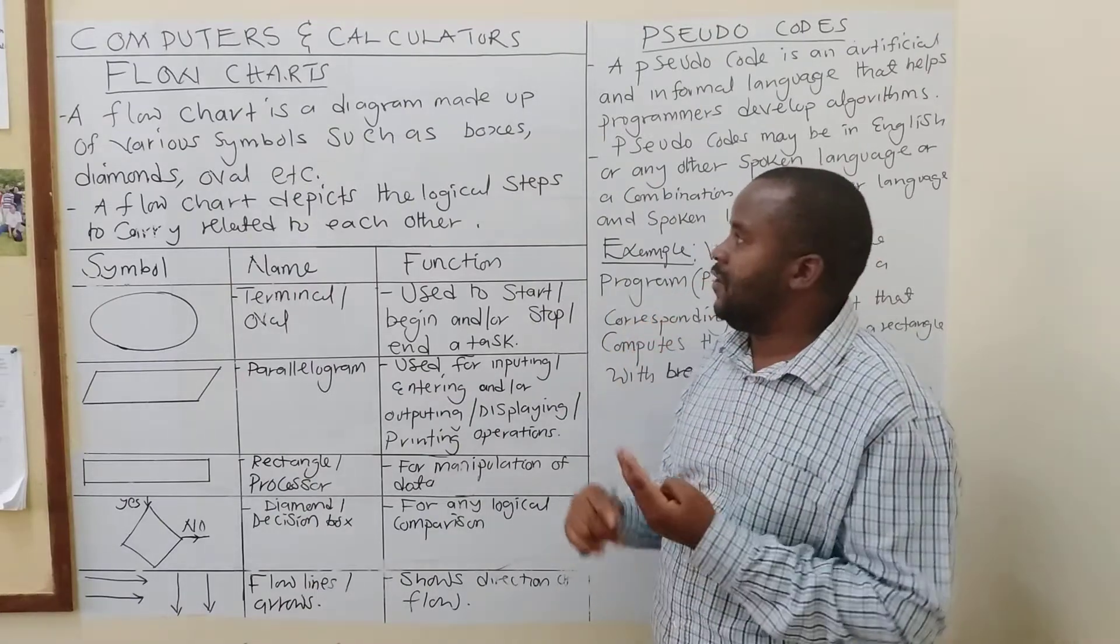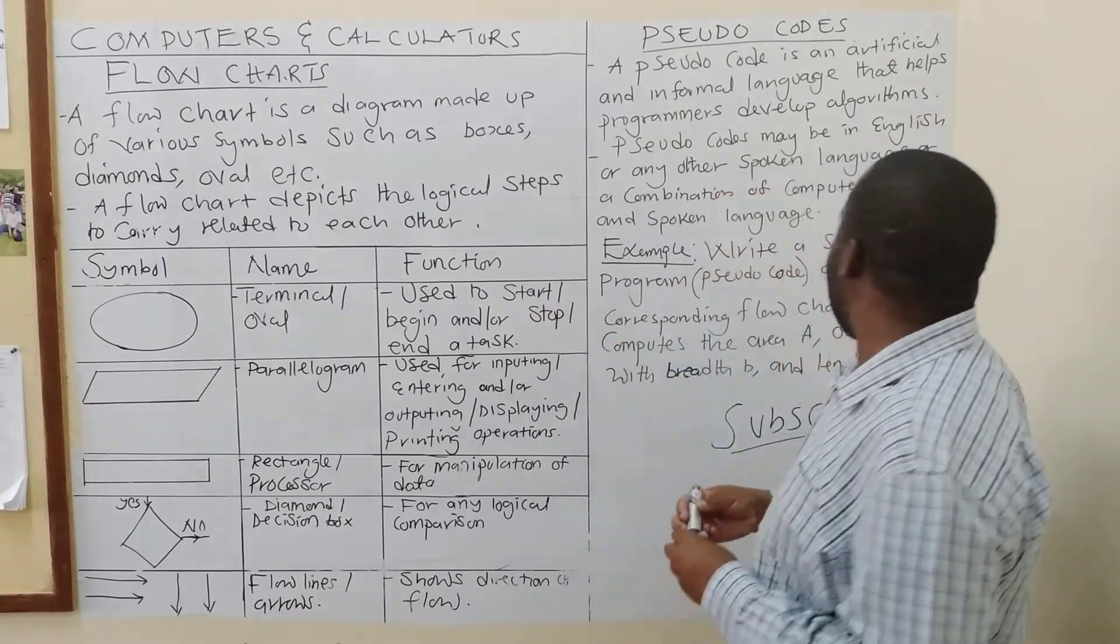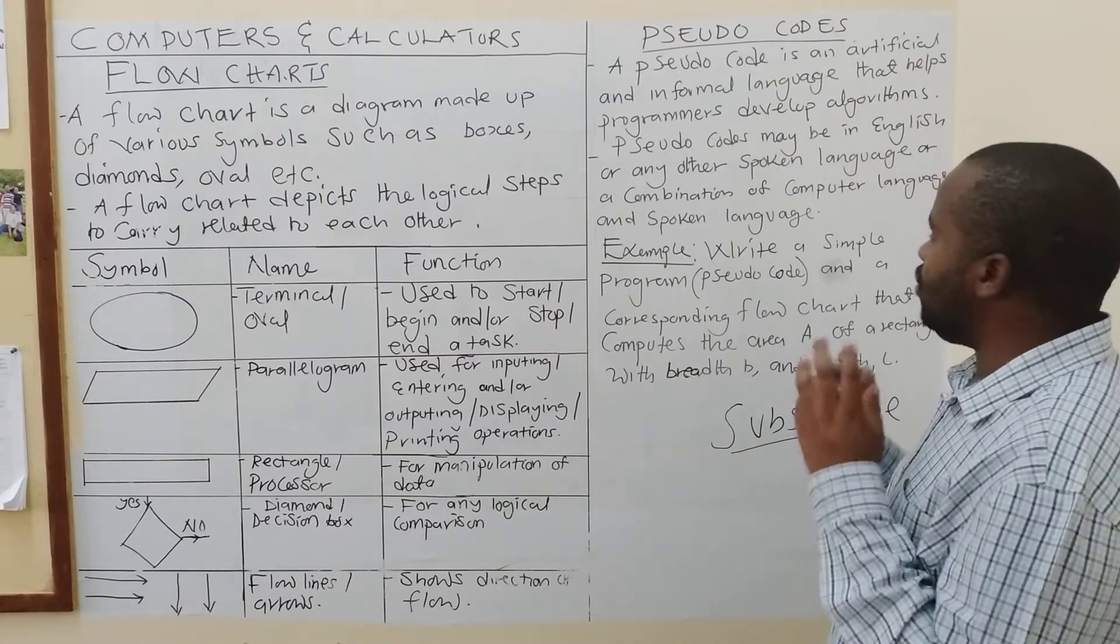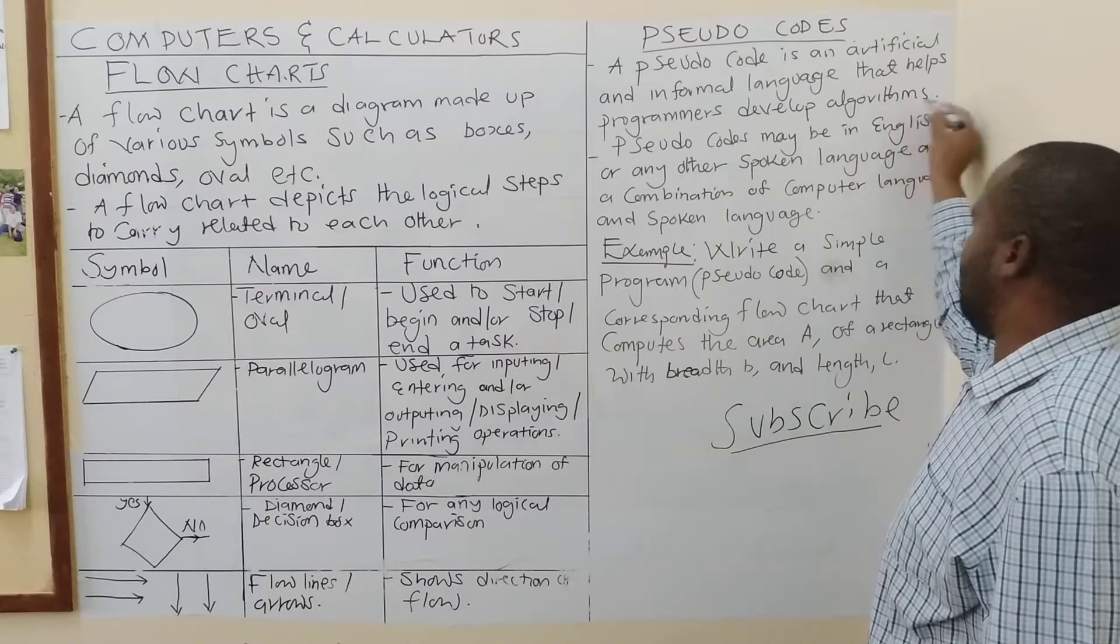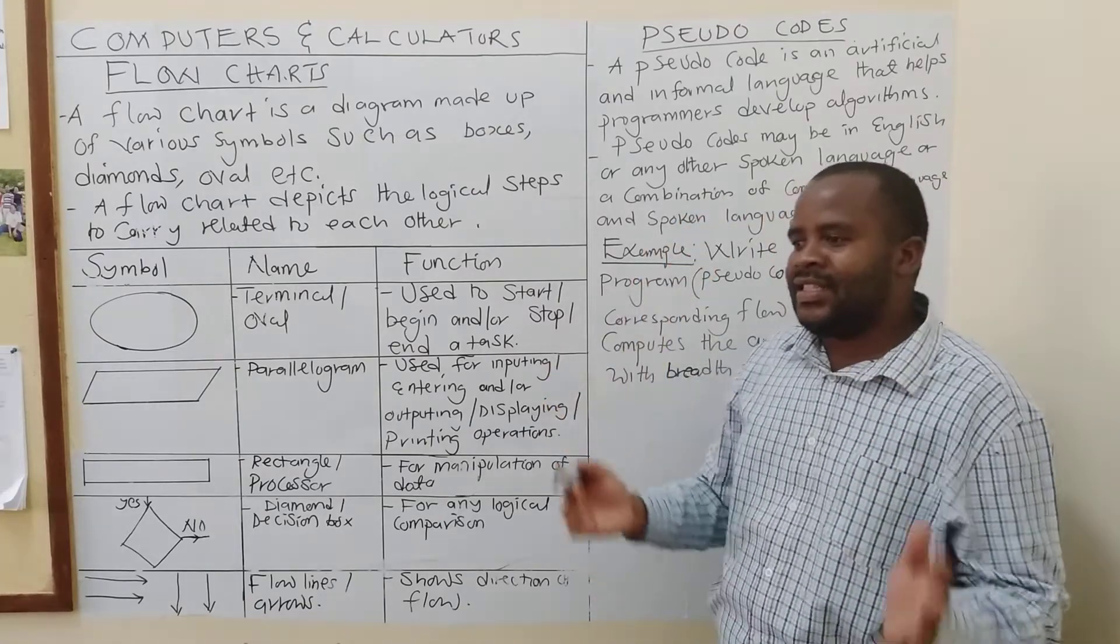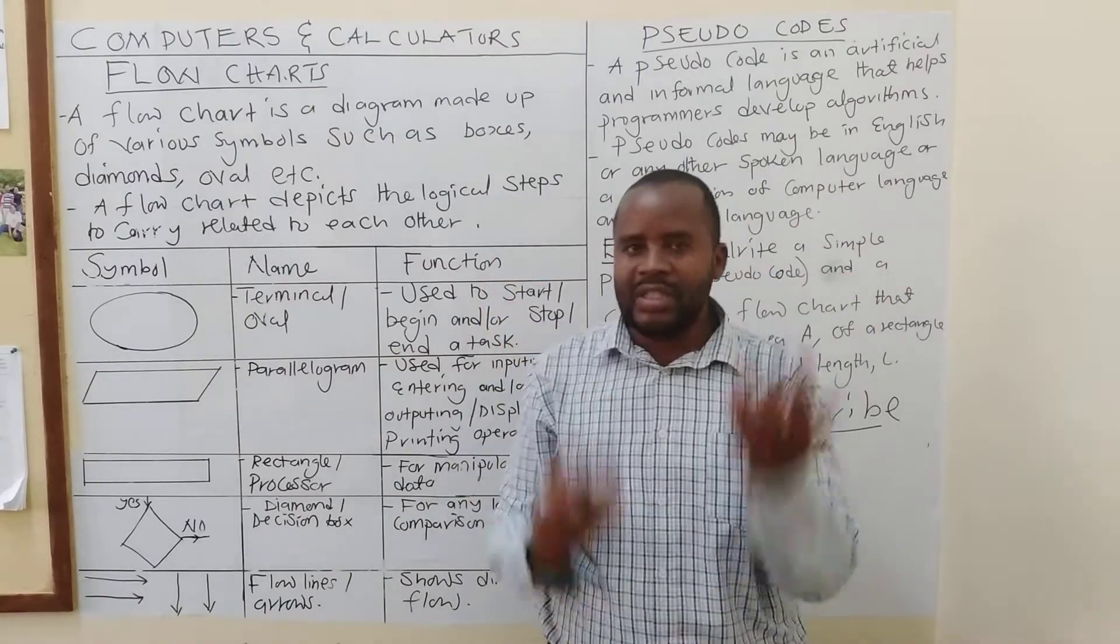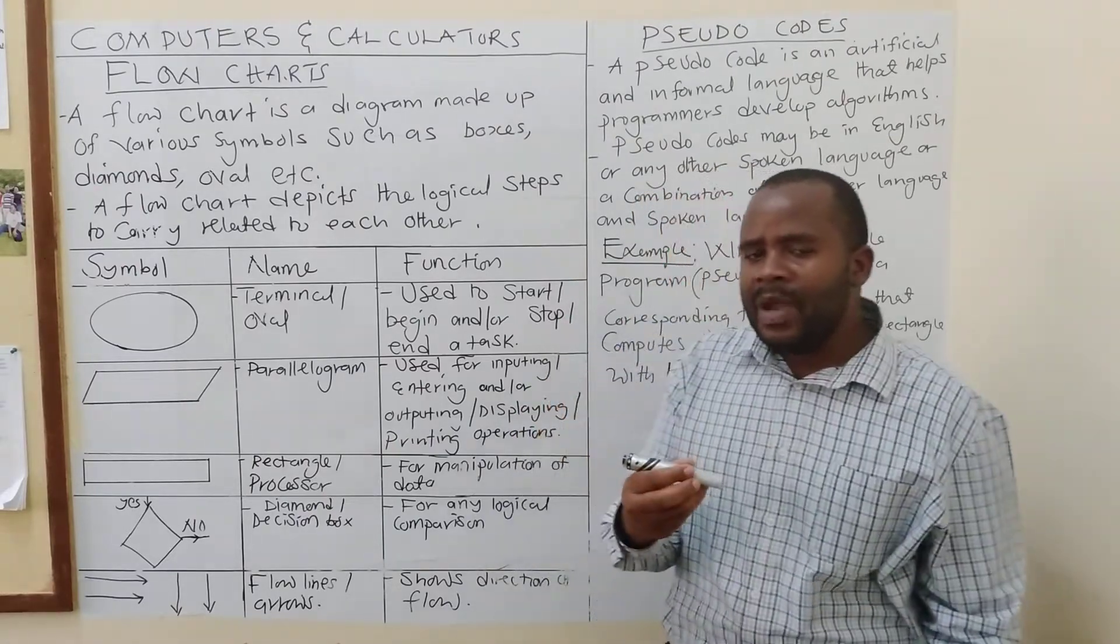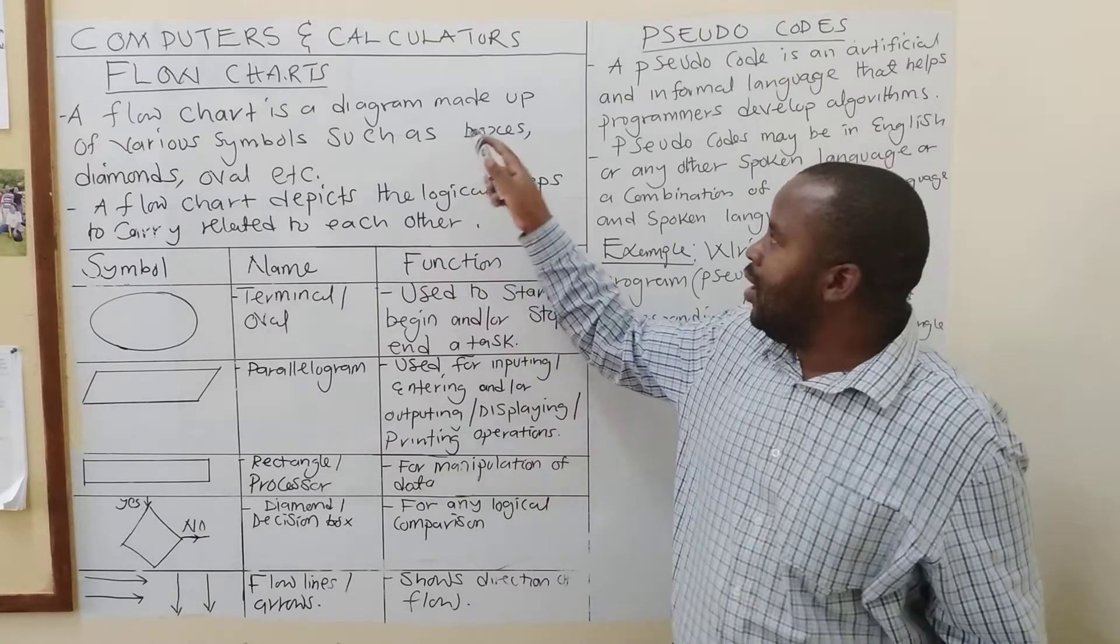We are interested in specific concepts: flowcharts and the pseudocode. Now, these two concepts, flowcharts and pseudocode, are methods that are used to implement an algorithm. So, we use the pseudocode and flowcharts to implement what we call an algorithm. Now, what is an algorithm? An algorithm is simply a series of steps that you need to undertake in order for you to execute or to manipulate a given task.